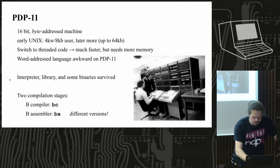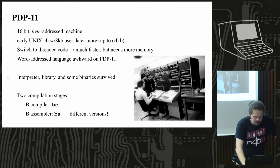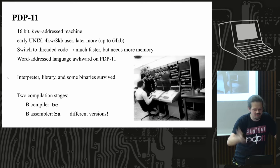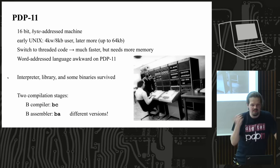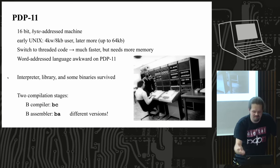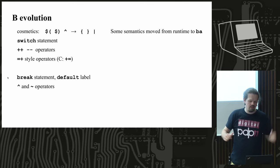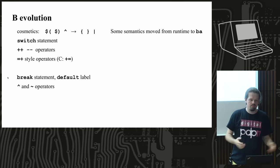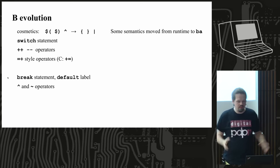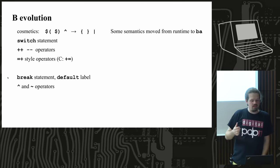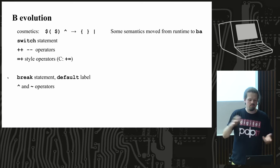When Ken added a new feature the compiler would grow and couldn't run in memory anymore, so he needed a version of B that could run from disk. That hasn't survived — I only know it from what Ken said. I didn't need it since I have a capable machine. For language differences, there are some cosmetic changes in the character set. The early PDP-7 version has no switch statement, no increment and decrement operators, and no compound assignment operators like += or -=.